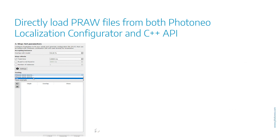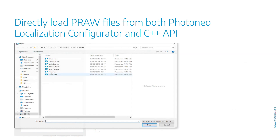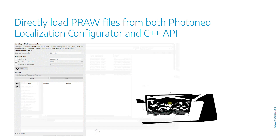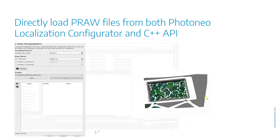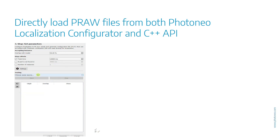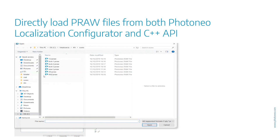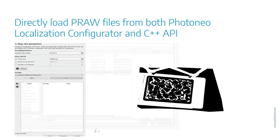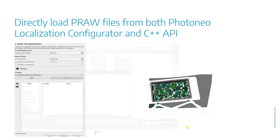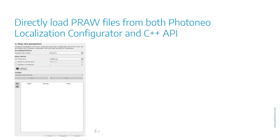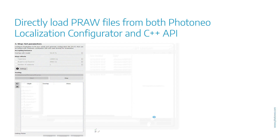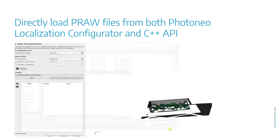The next change is for those who like to test and evaluate different settings of the localization on a set of PRAWs without being connected to the scanner. In order to save some of your time, you can now directly load the PRAW in the localization configurator or our API without even having to open the Foxy control. This also applies for the drag and drop feature, which was extended into the whole area of the window.